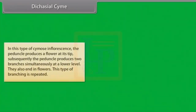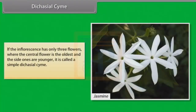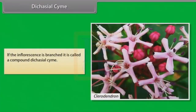In Diocasial Chyme, the peduncle produces a flower at its tip; subsequently the peduncle produces two branches simultaneously at a lower level which also end in flowers, and this type of branching is repeated. If the inflorescence has only three flowers where the central flower is the oldest and the side ones are younger, it is called a simple diocasial chyme. Example: Jasmine. If the inflorescence is branched it is called a compound diocasial chyme. Example: Chlerodendron, Ixora.